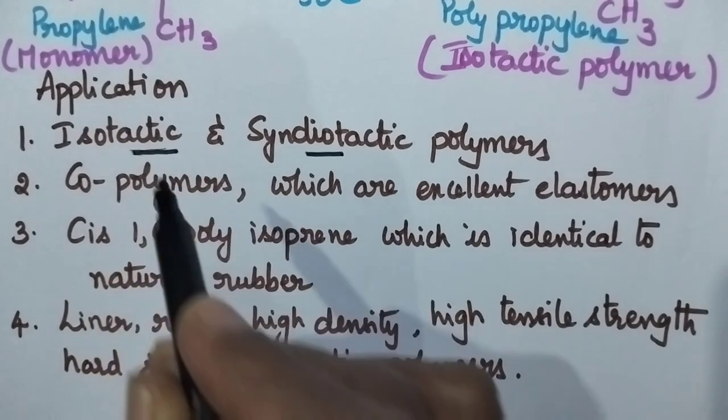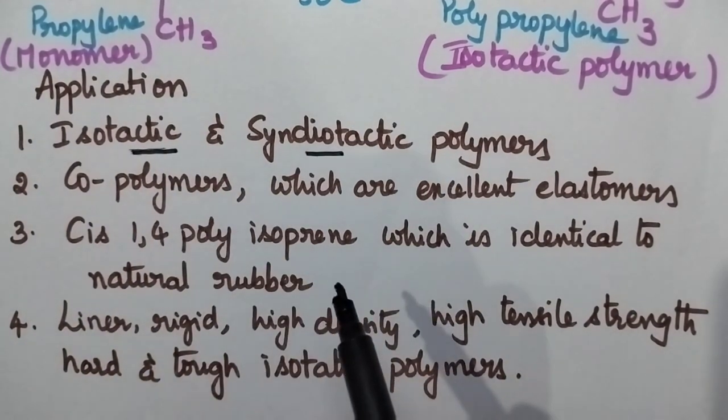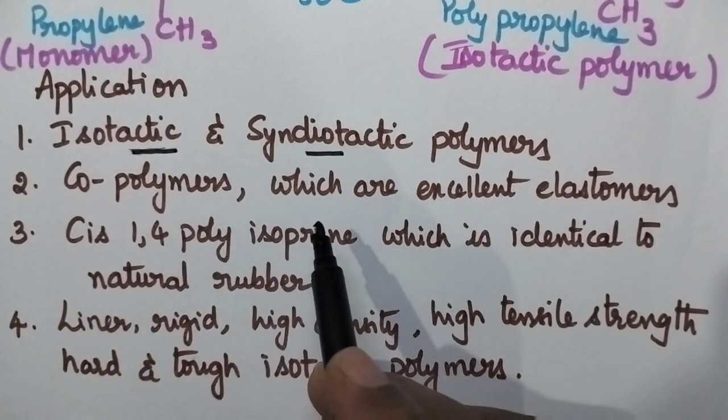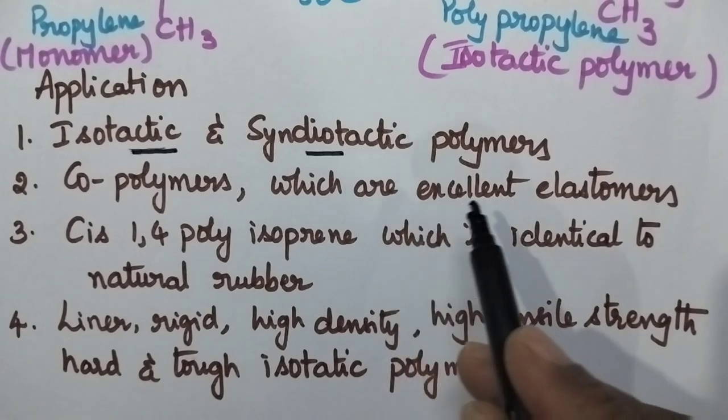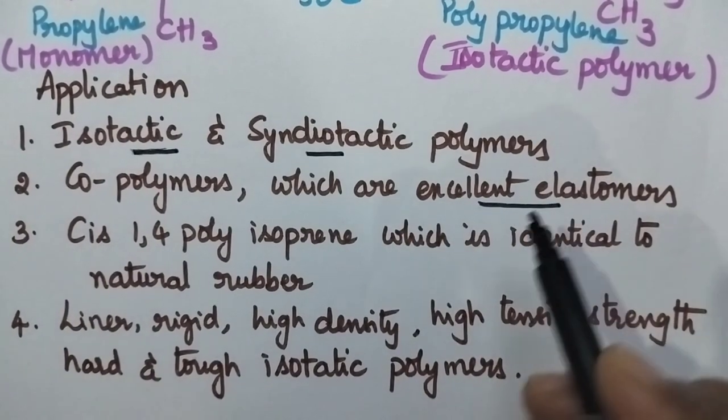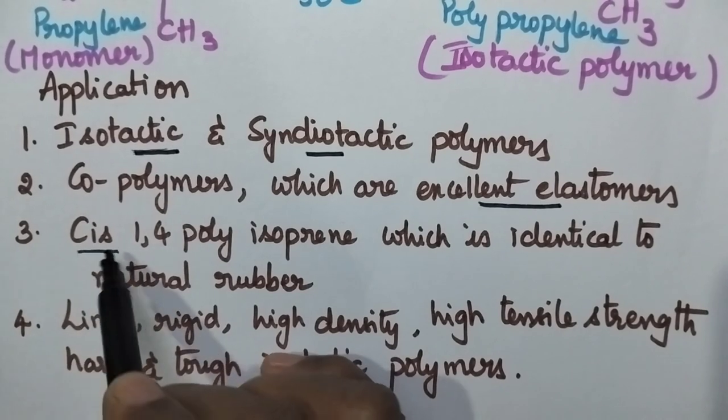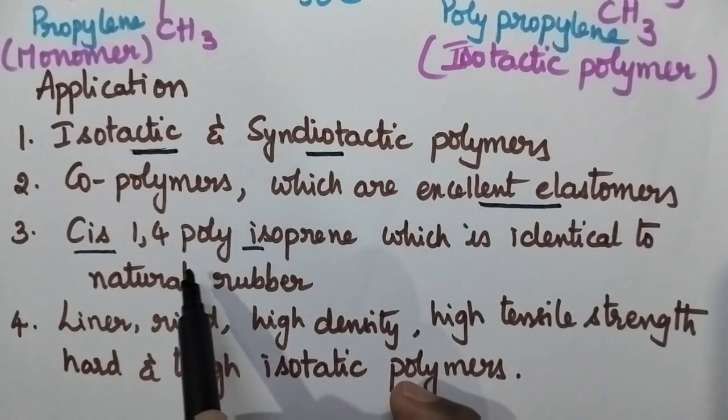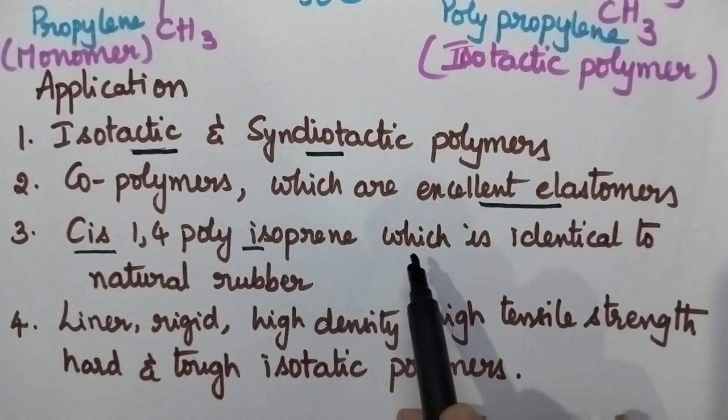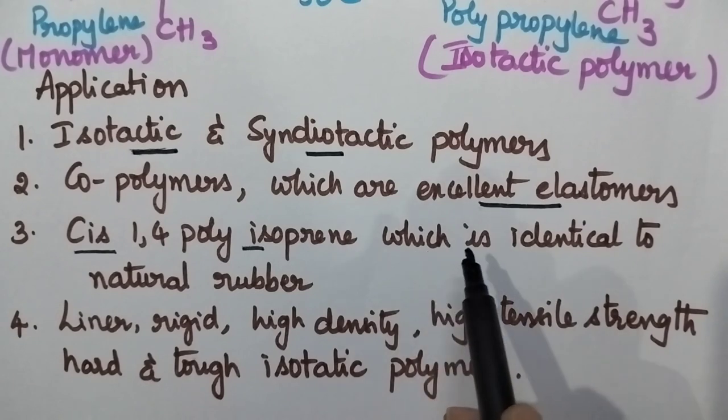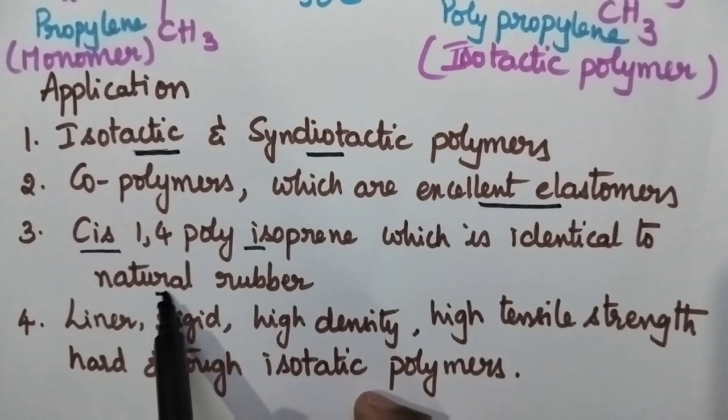Especially this polymerization is useful for the preparation of copolymers which act as excellent elastomers. In particular, it can be used for the preparation of cis-1,4 polyisoprene which is having structural similarity to that of natural rubber.